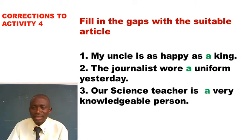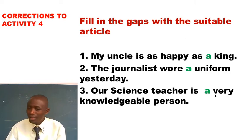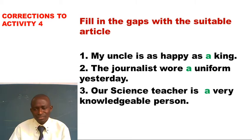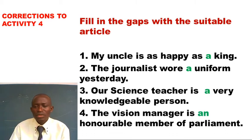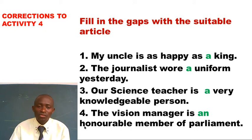Number 3 says: 'Our science teacher is a very knowledgeable person.' We check whether the next word after the article is a consonant or vowel sound — it is a consonant sound, so it takes article A. Number 4 says: 'The vision manager is an honorable member of parliament.' When we test 'honorable', it starts with the letter H, which is not a vowel, but the sound it begins with is a vowel sound O, so it takes article AN.